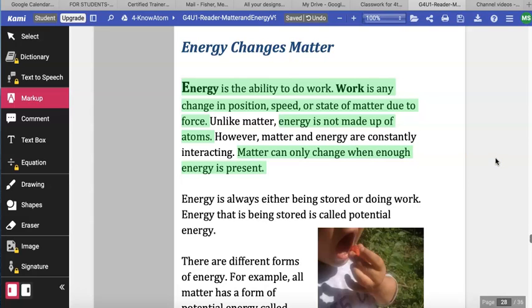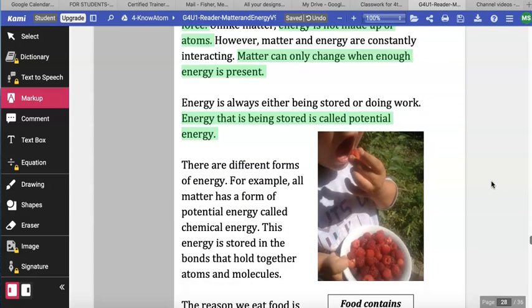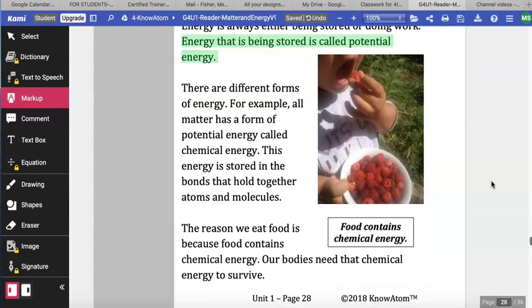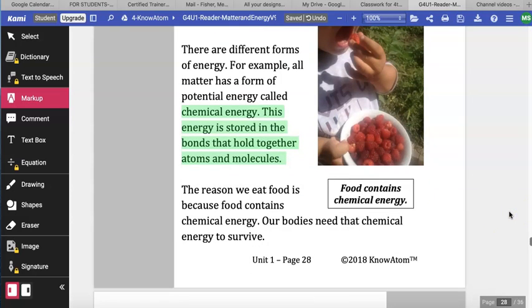Energy is always either being stored or doing work. Energy that is being stored is called potential energy. There are different forms of energy. For example, all matter has a form of potential energy called chemical energy. This energy is stored in the bonds that hold atoms and molecules together. The reason we eat food is because food contains chemical energy. Our bodies need that chemical energy to survive.